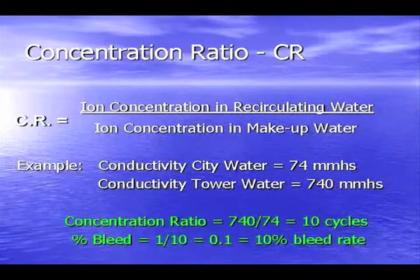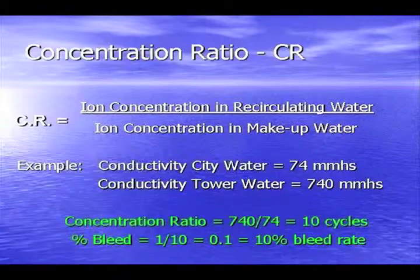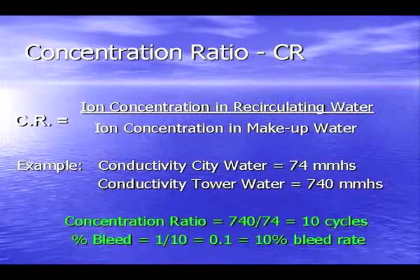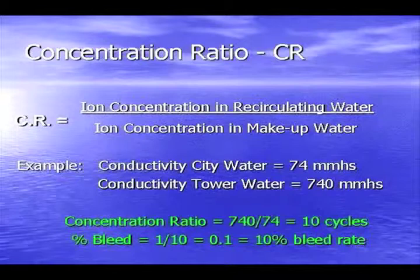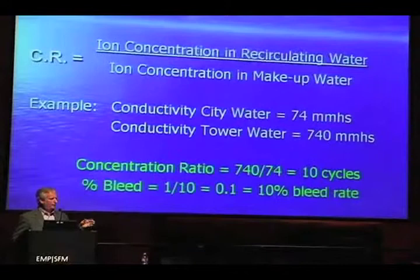The definition of concentration ratio is basically the ion concentration in the recirculating water divided by the ion concentration of the makeup water. That determines your cycles. For example, the conductivity of city water here is about 74 micromoles. If your tower runs at 740 micromoles, you're concentrating it up and running basically 10 cycles — 740 divided by 74 is 10 cycles. At 10 cycles, you're running about a 10% bleed rate, meaning about 10% of the water going to the cooling tower is being removed through bleed. The higher you go, the smaller percentage your bleed rate; the lower you go, the higher percentage your bleed rate.